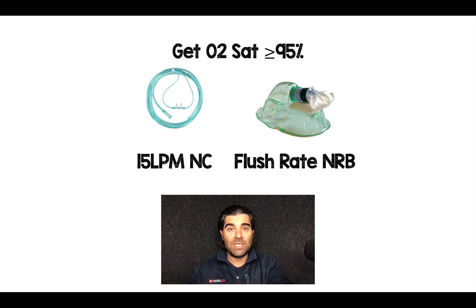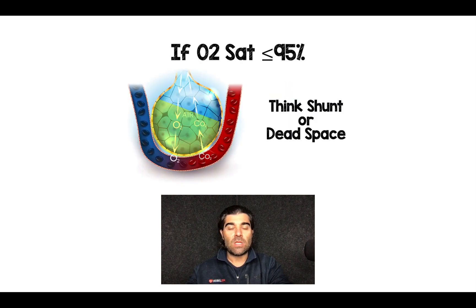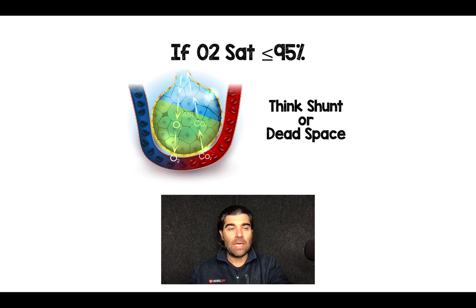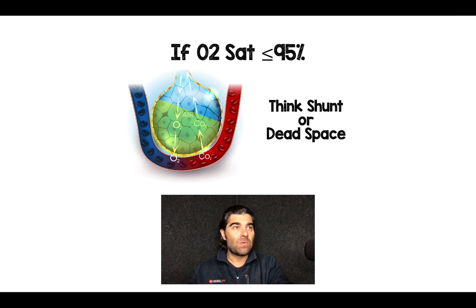If I've not achieved this with two oxygen sources, then I need to start thinking about either a shunt or dead space physiology within the lungs. A shunt would be things in the alveoli like fluids or purulent material from pulmonary edema or pneumonia. Dead space would be things like pulmonary embolism.